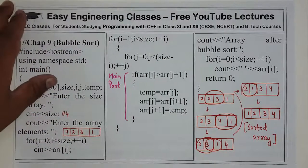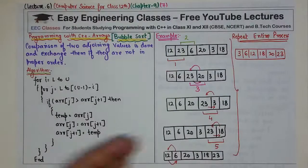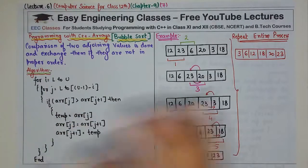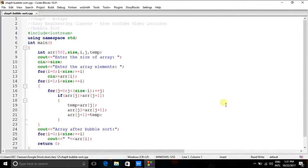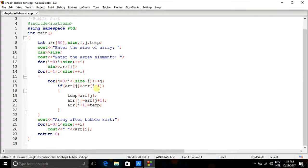This is the complete program. अब इस program को एक बार हम code blocks में run करके देख लेते हैं. And this is the example. अगर आपके exam paper में आता है कि explain bubble sort with example, then you have to write the algorithm and complete example. और question के number के साथ C++ code भी लिखने को बोल सकते हैं.